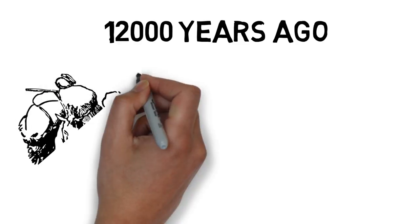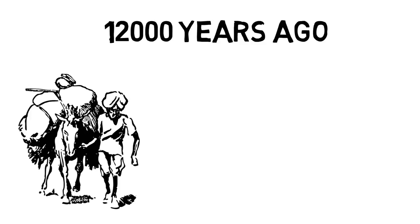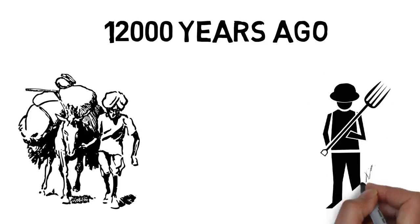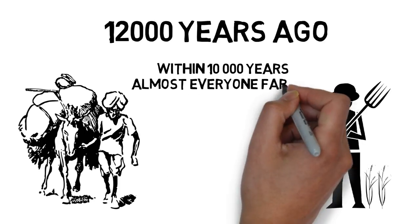What we call the agricultural revolution is when Homo sapiens stopped relying solely on hunting and gathering and instead began cultivating crops and domesticating animals. Within 10,000 years, almost all of humankind has settled into agriculture, a truly revolutionary shift.